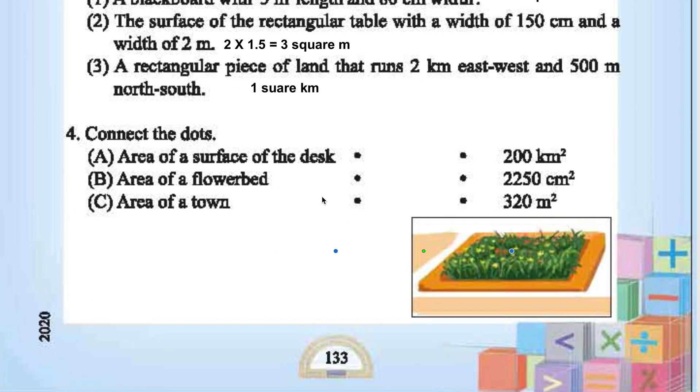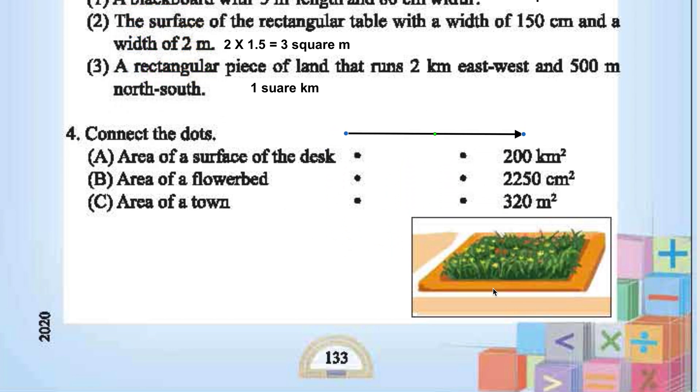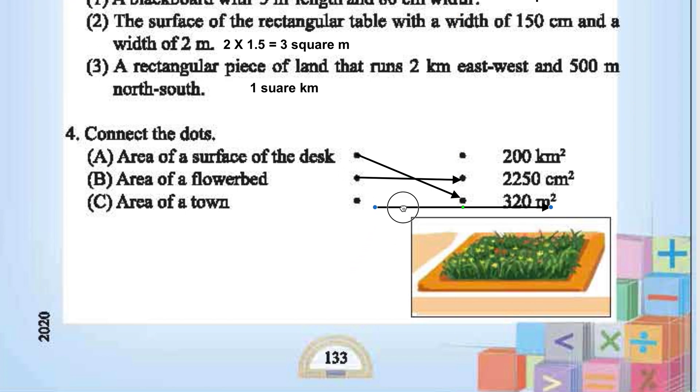Now see the figure. The area of the surface of the deck, the area of the flowerbed. The area of the town, 2250, this is 320. The area of the town, 200 kilometer. Okay.